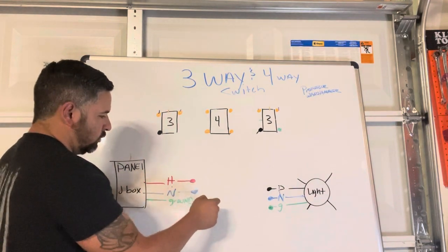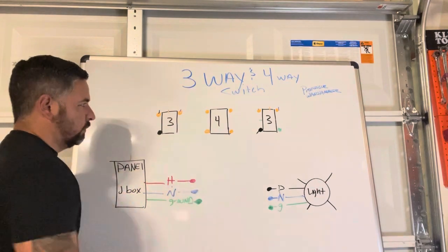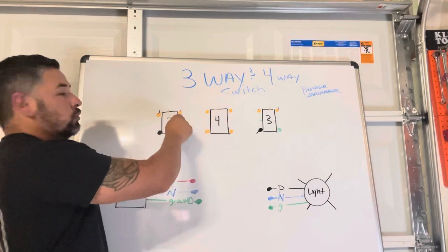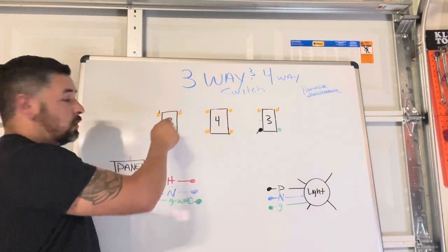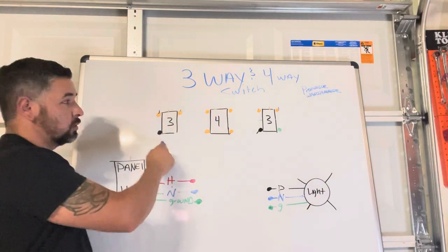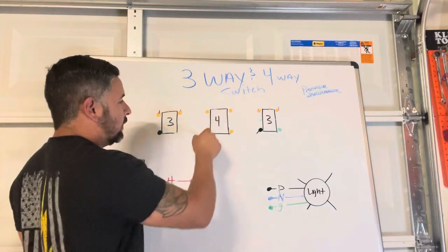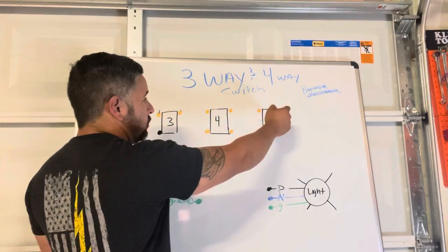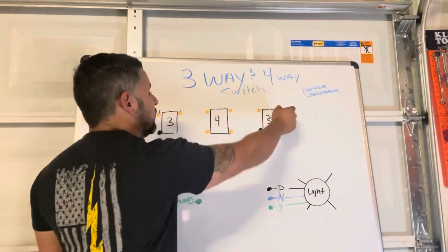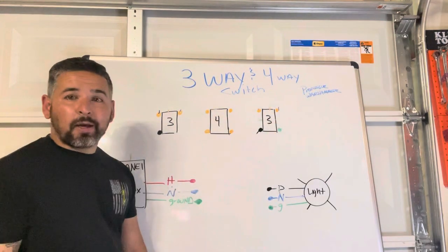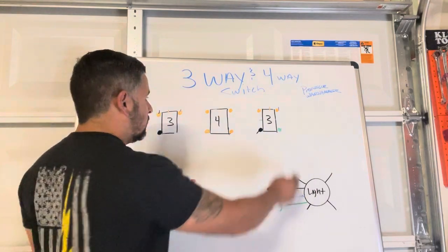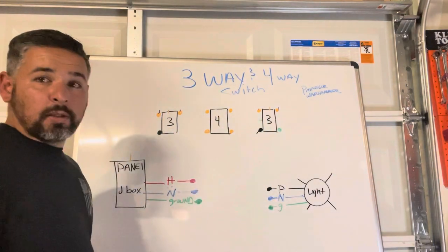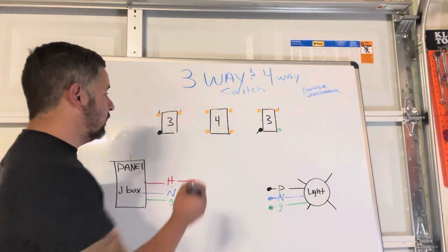Over here on the panel side it's gonna be red, blue, green: hot, neutral, ground. On your three-ways you're gonna have two gold screws, one black screw. On a four-way you're gonna have two gold on top, two gold on bottom. On your three-way you're gonna have two gold on top, black on bottom. All of them are gonna have grounds, so the grounds are for everything.